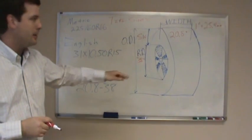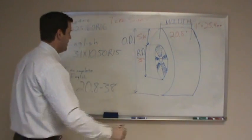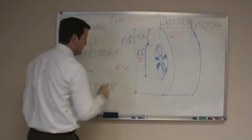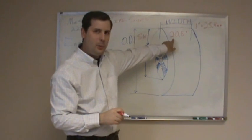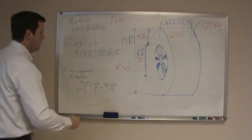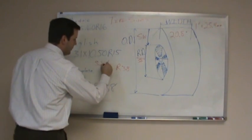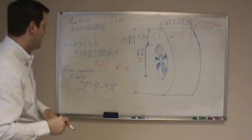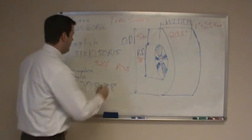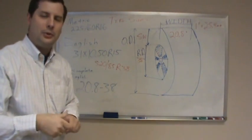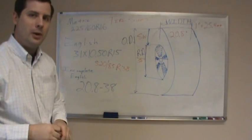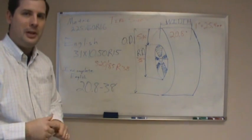Now let's look at converting that to a metric size. The 38 will still be at the end, and most metrics are radial, so I'll put an R there. To convert the width from 20.8 inches, keep in mind that one inch equals 25.4 millimeters, so we'd look at about a 520-millimeter width. Also, older sizes generally have an aspect ratio of about 85. So if you have a tractor with a 20.8/38, you'd be looking for a replacement metric size of around 520/85/38. It may change from one brand to the next, but I hope that helped decode tire sizes.